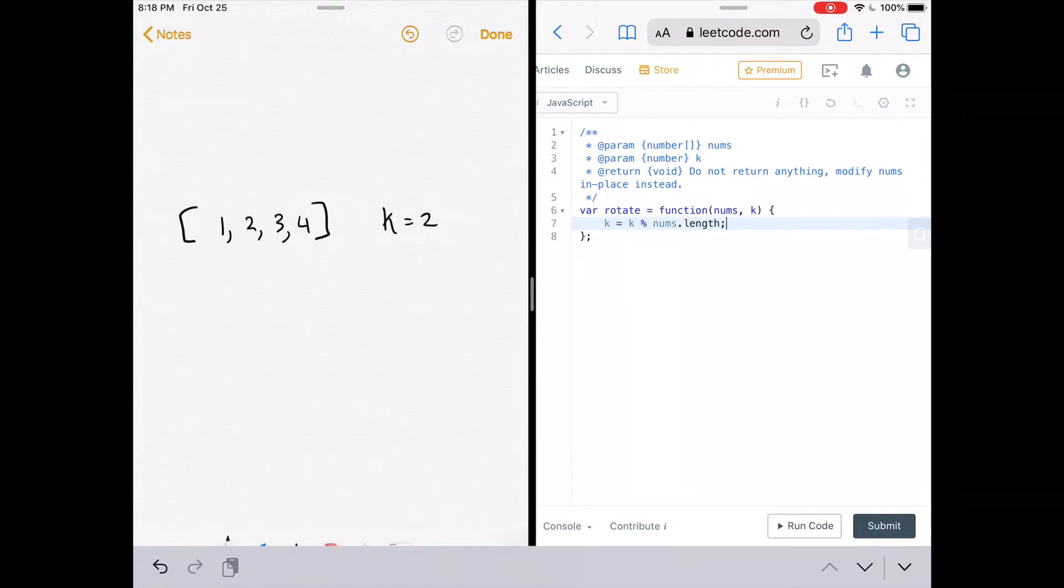So in this case k equals 2, so you'd rotate it two times. But that's the same thing as k equals 6, k equals 10, k equals 14. So that's why you just need to know what the remainder is when you divide k by the length of the array.